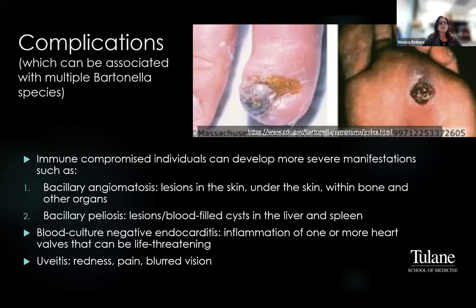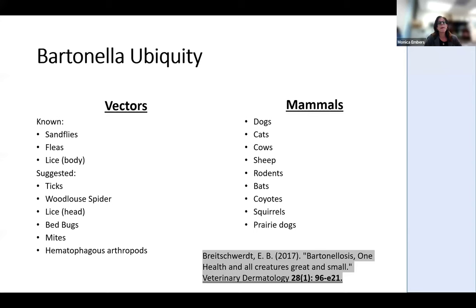There can also be complications, especially in immunocompromised individuals. This includes bacillary angiomatosis, which involves lesions in the skin, under the skin, within the bone, and other organs; bacillary peliosis, which are blood-filled cysts in the liver and spleen; blood culture-negative endocarditis, typically involving inflammation of one or more heart valves, which can be life-threatening; and uveitis, which presents as redness, pain, and blurred vision.